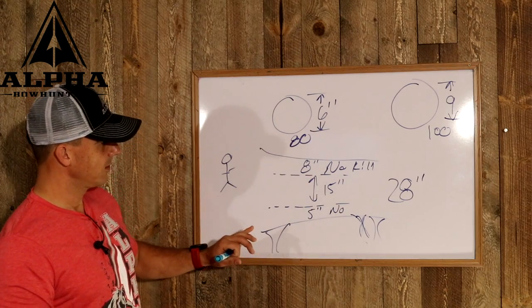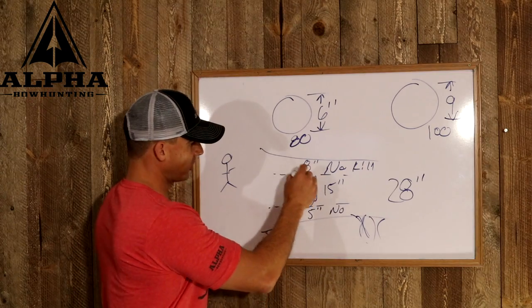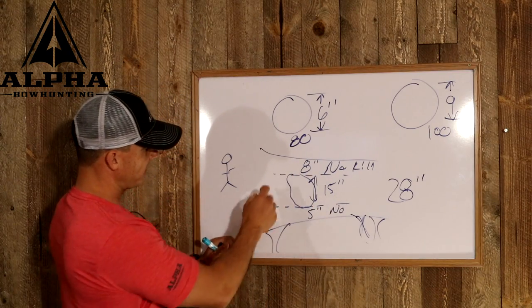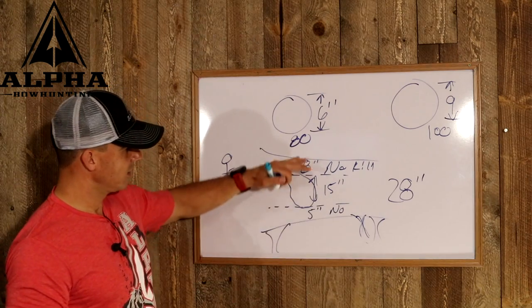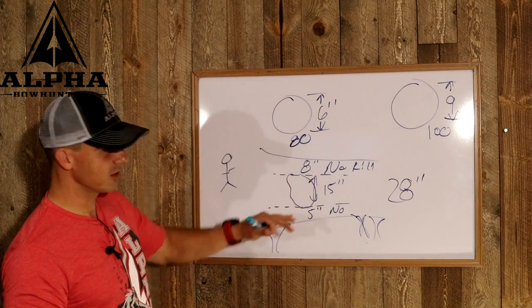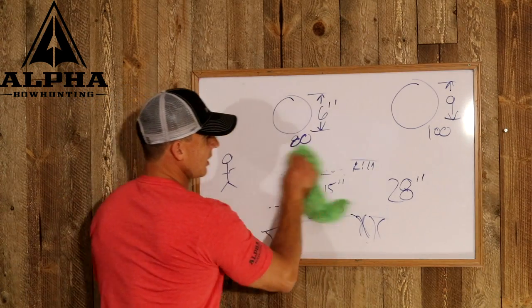From this, this is ideal. This is optimal. This is in a perfect situation. When you start talking about missing a shoulder, hitting lungs, heart, liver area, we're talking about an elk having potentially a 15 inch vitals area.